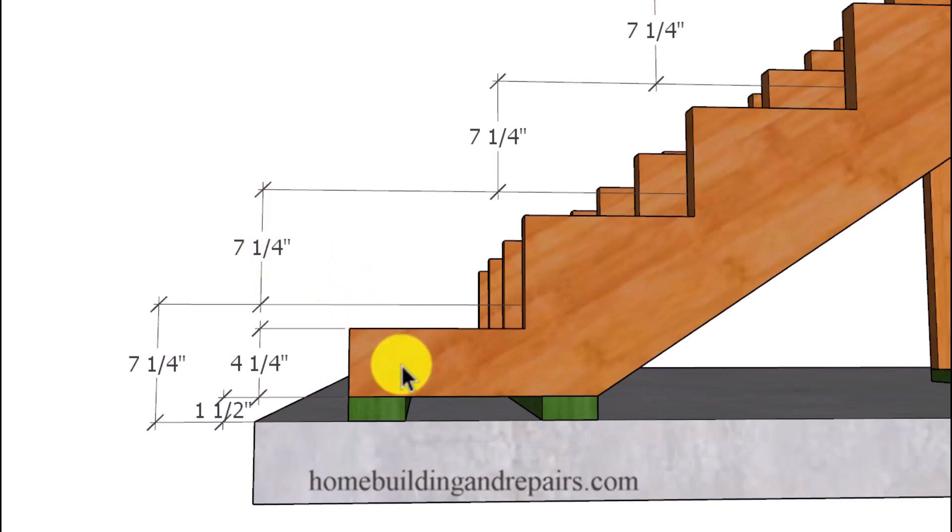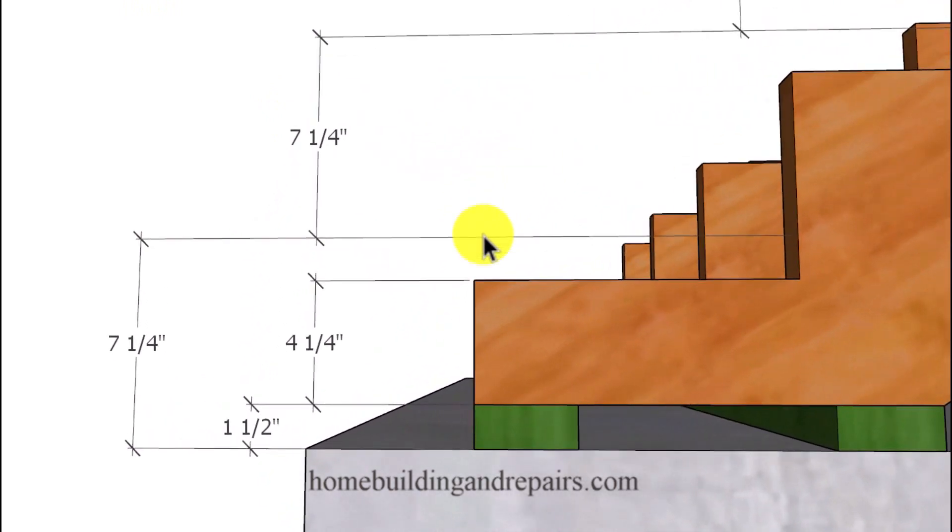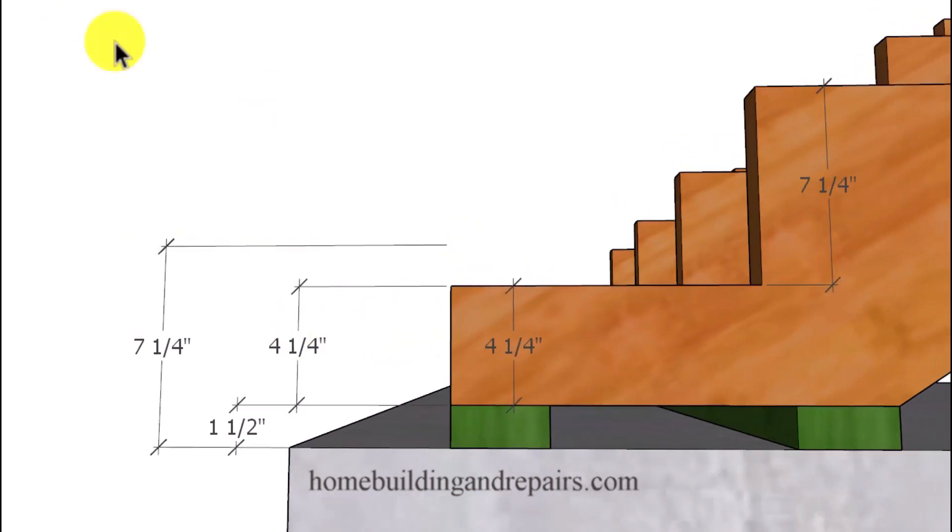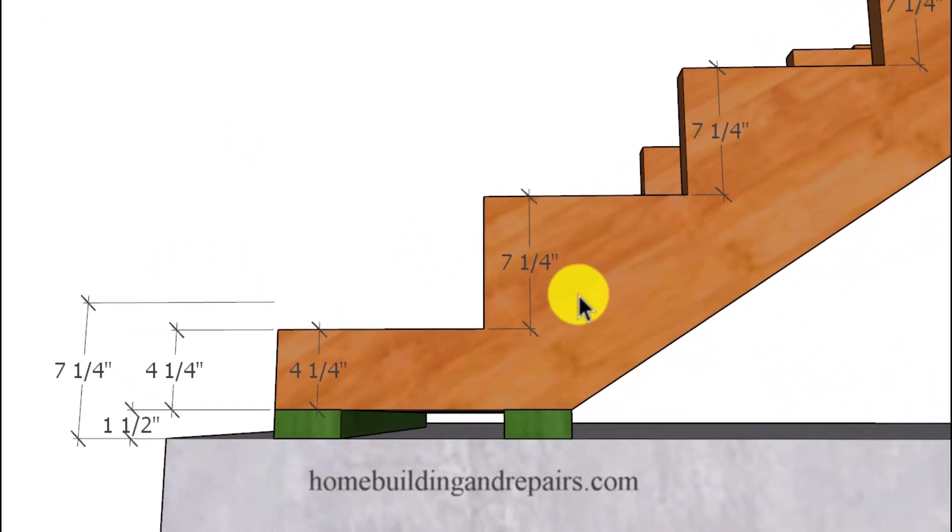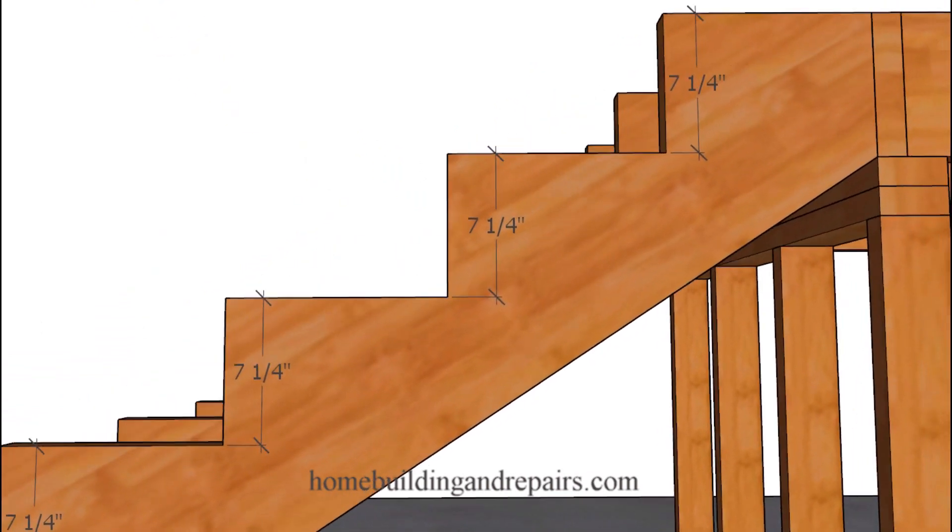And that should make sense looking at this design here. Again, the height of the riser is going to be represented by the difference between the floor and the top of the step. And the rest of the measurements for each individual riser should be the same working your way all the way up to the top of the stairway.